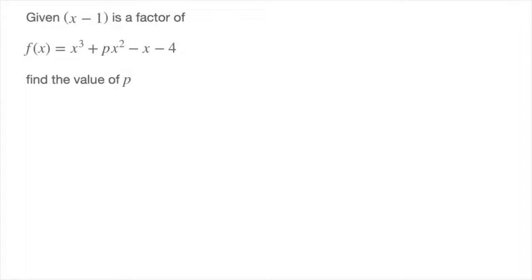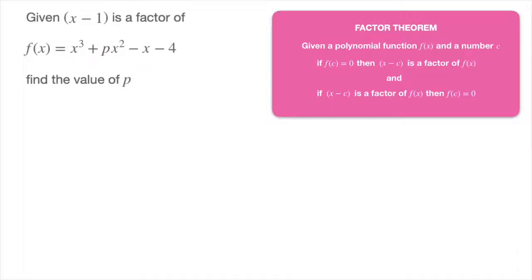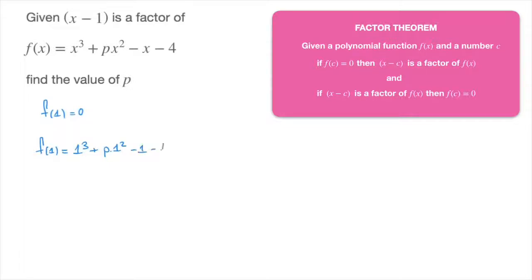I'll just move the question to the side. The important thing to realize is that since we're told x minus 1 is a factor of this polynomial, the factor theorem lets us state that 1 must be a zero of that polynomial. In other words, we can write f of 1 must equal 0. Replacing every x in f of x by 1, we obtain f of 1 equals 1 cubed plus p times 1 squared minus 1 minus 4.